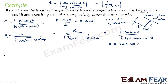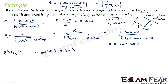Now let us find the value of p² + 4q², which is what we are asked to prove. This equals k²·cos²(2θ) + 4·k²·sin²θ·cos²θ. Taking k² as common factor, we proceed to simplify.